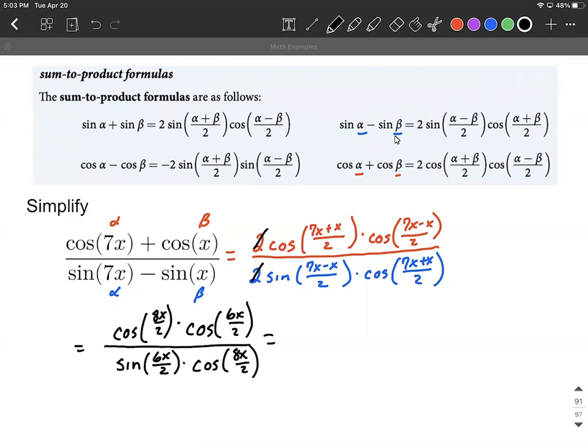Now we can reduce down: 8x divided by 2 is going to be 4x, times cosine of 6x divided by 2, which is going to be 3x. For the denominator, we have sine of 3x times cosine of 4x.